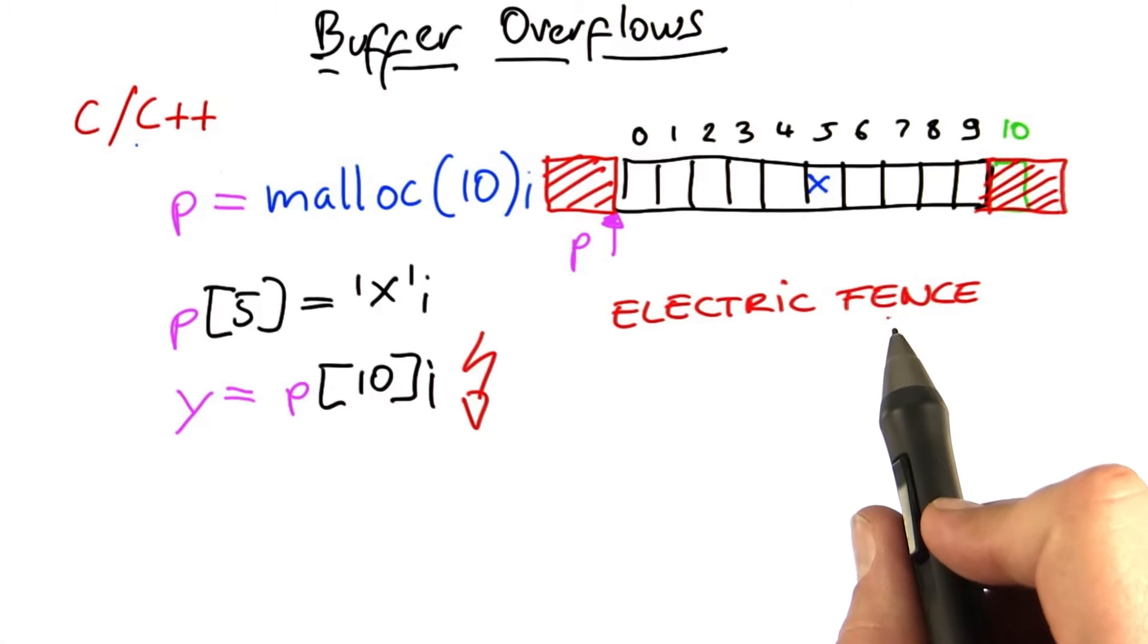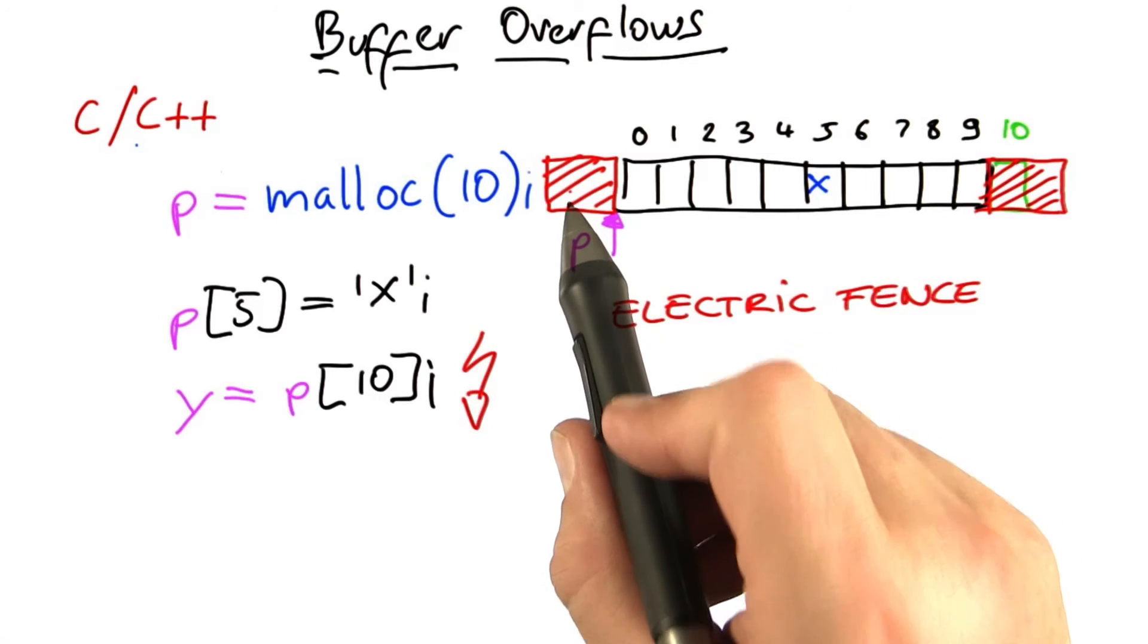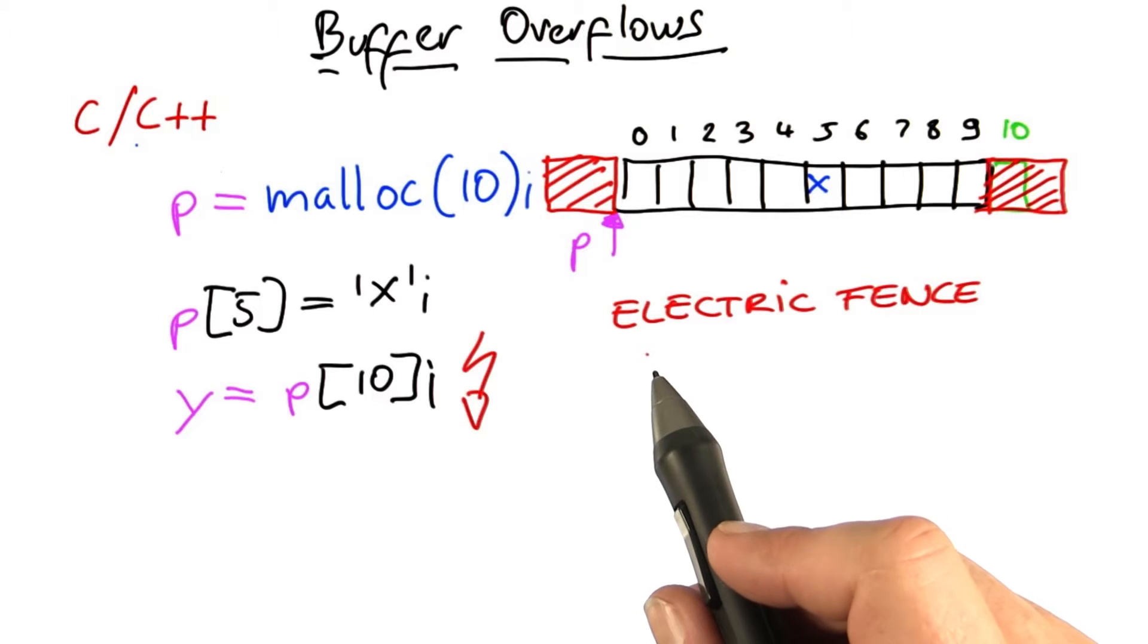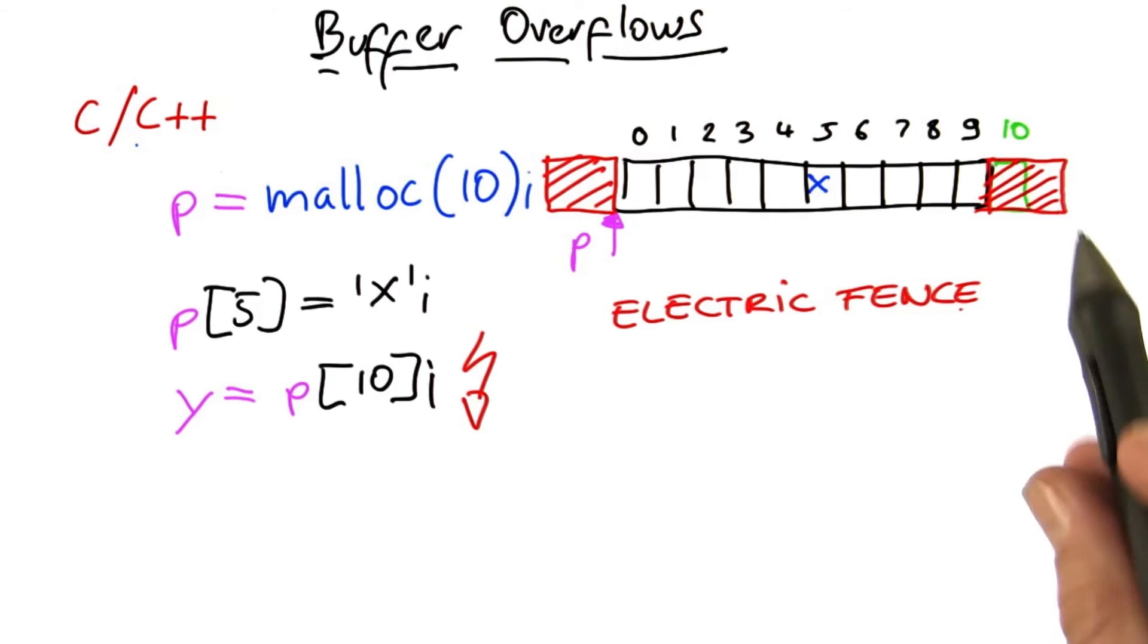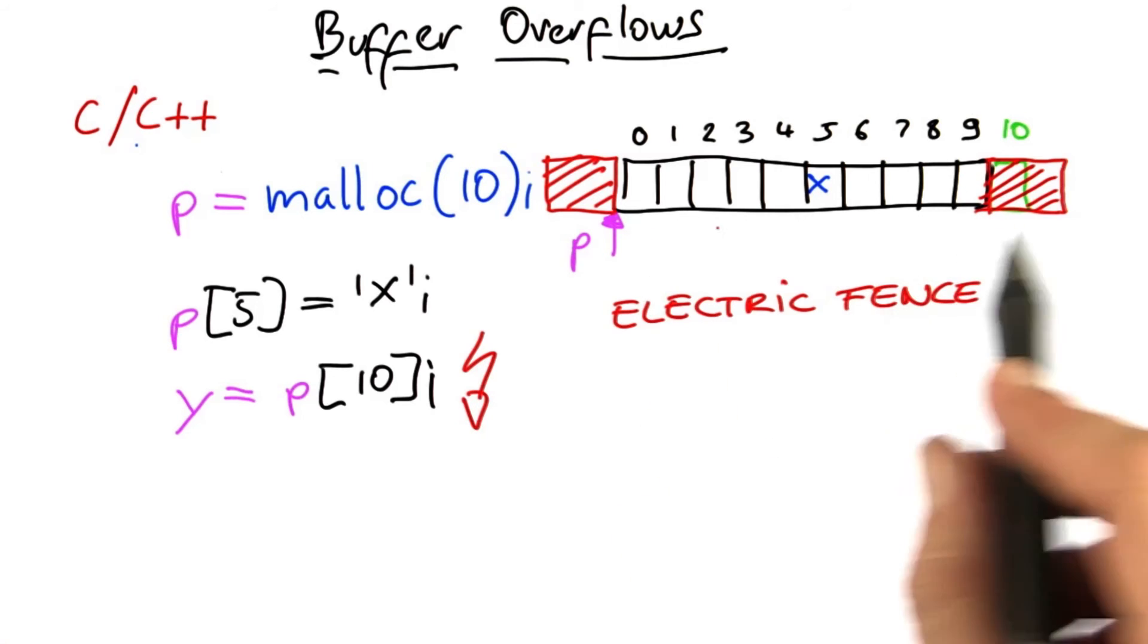Tools for C and C++ which do that include tools like electric fence which does precisely that, places these blocks in front and before every allocated block, and therefore detects when reads and writes happen outside of these allocated areas.